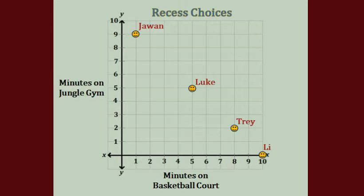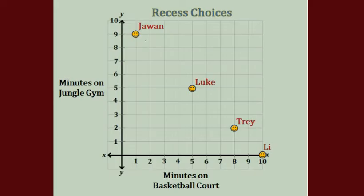Who spent the most minutes on the jungle gym? Well, the y-axis — the vertical axis — is the one that's going to show us the jungle gym minutes, while the x-axis is showing us the basketball court minutes. So we go up the y-axis vertically and who spent the most time on the jungle gym? It's going to be the one that's the highest up, and that is going to be Juwan. Juwan spent nine minutes there.